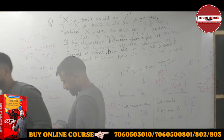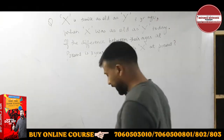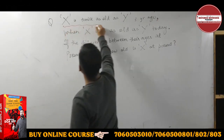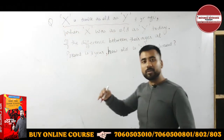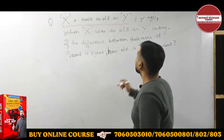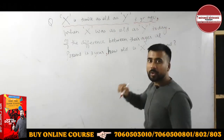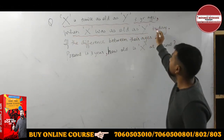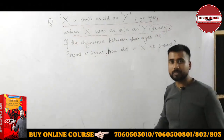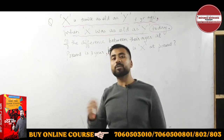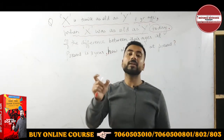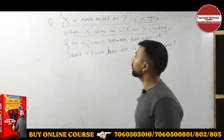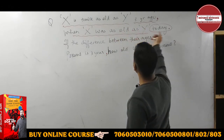So this is the question. What we are given: X is twice as old as Y — X is double Y's age. But when? Three years ago. And the other condition: when X was as old as Y today — 'today' means present. Now this condition is necessary to understand: when X was as old as Y today.